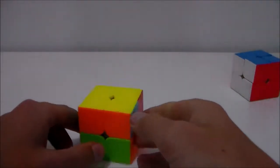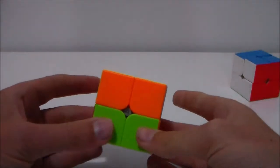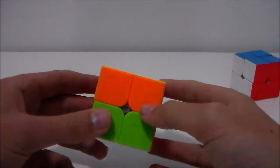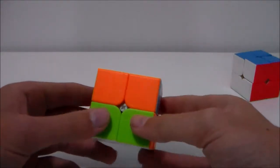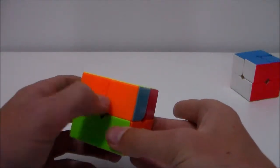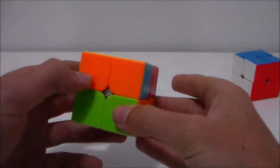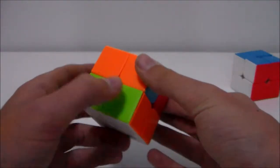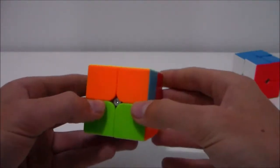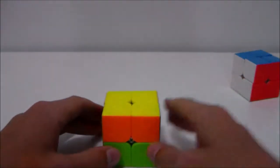We now move on to the final step, permuting last layer or also known as PLL. So there are two simple cases for this. There is the case where there is a line on the yellow side and there is also the first layer fully oriented. This will only require you having to do one algorithm.